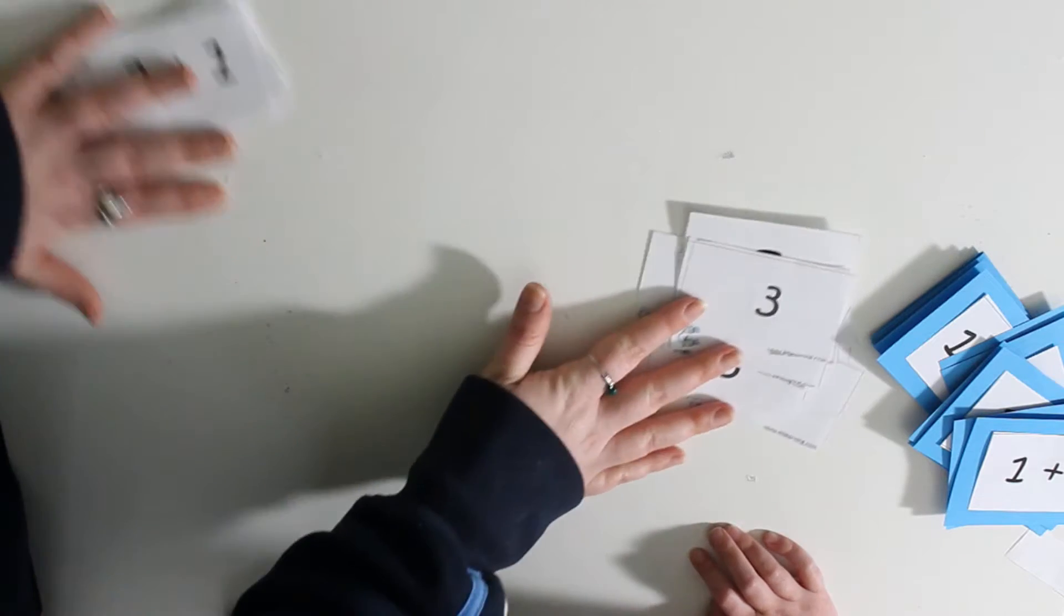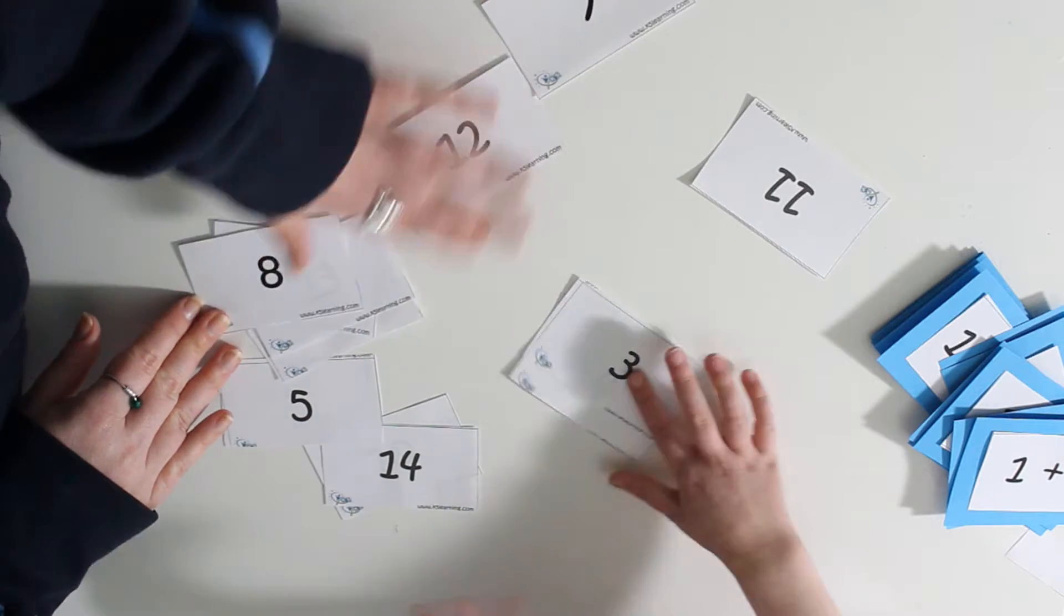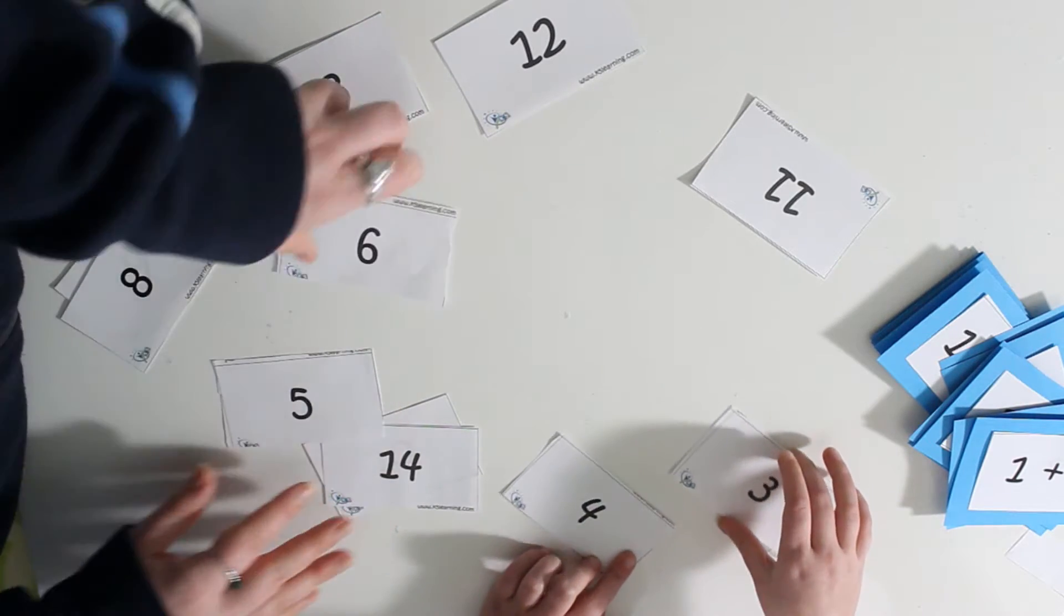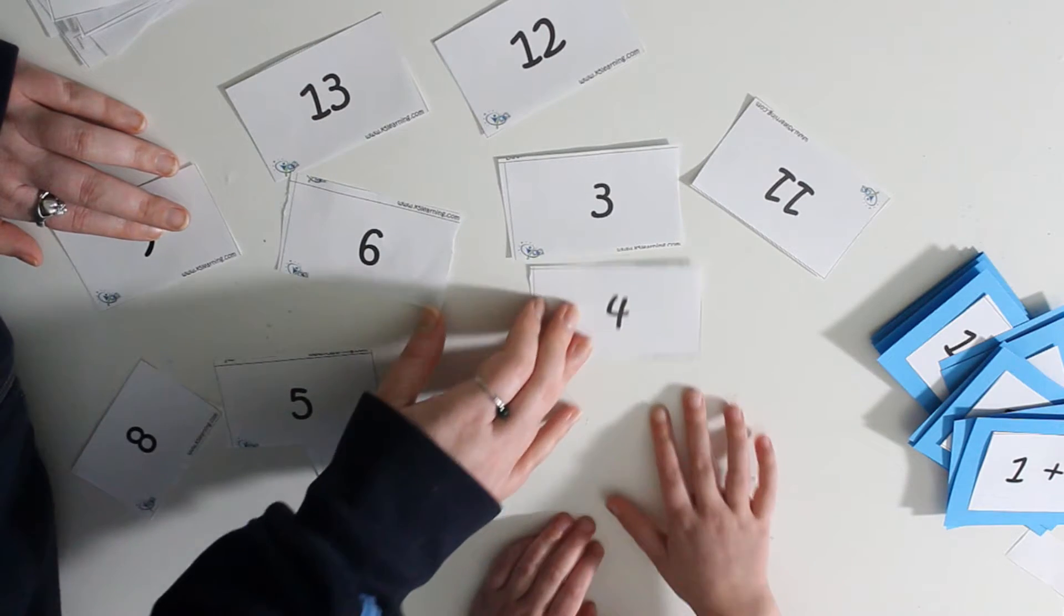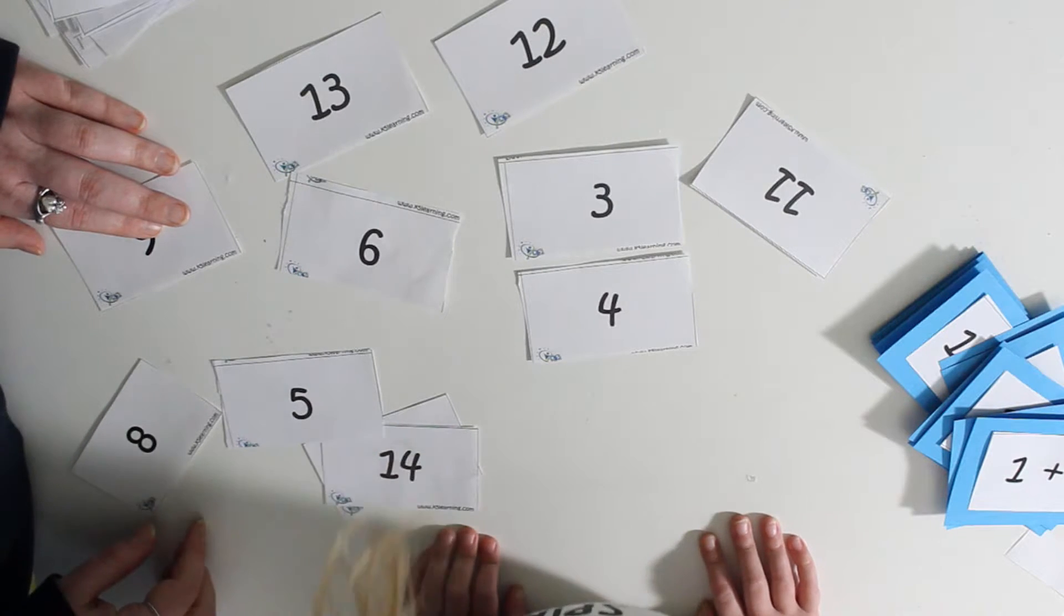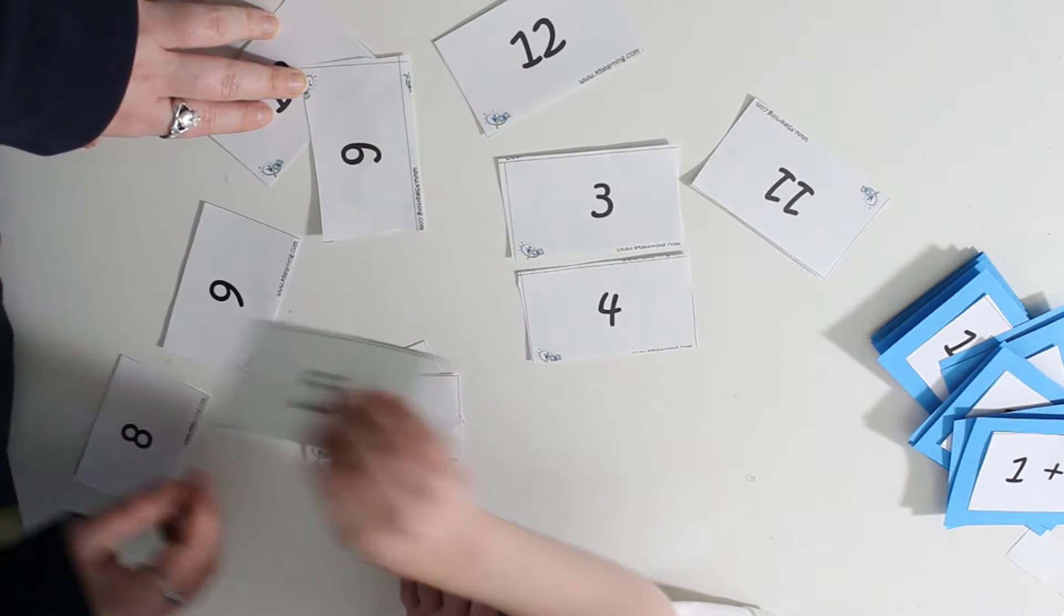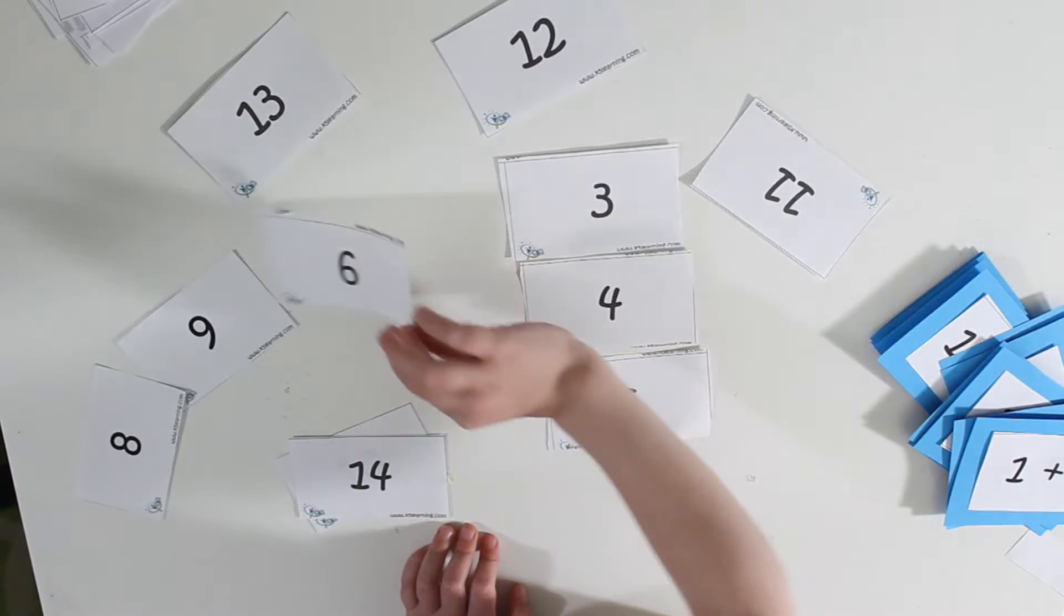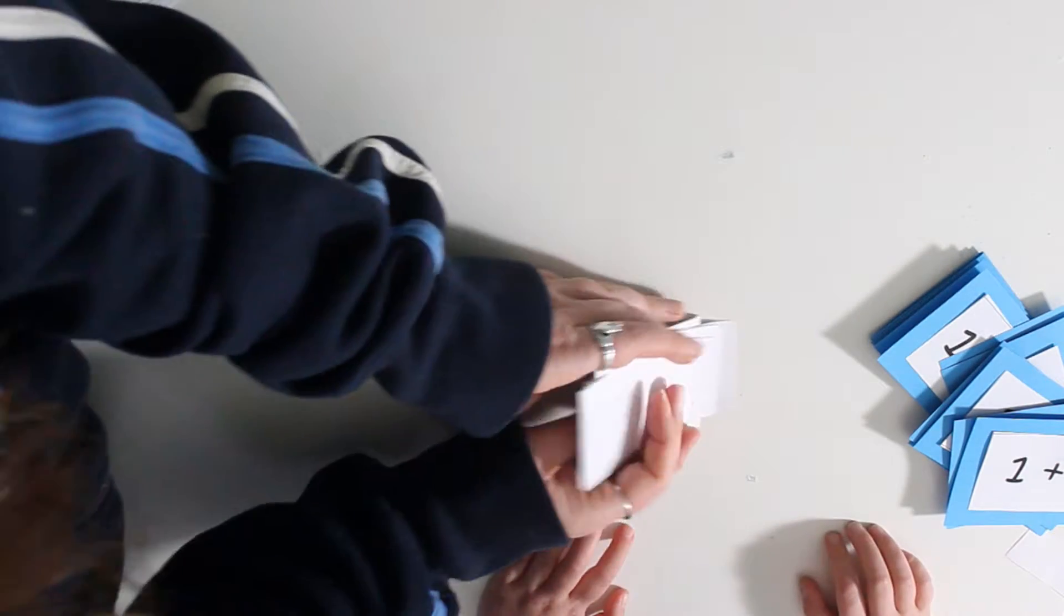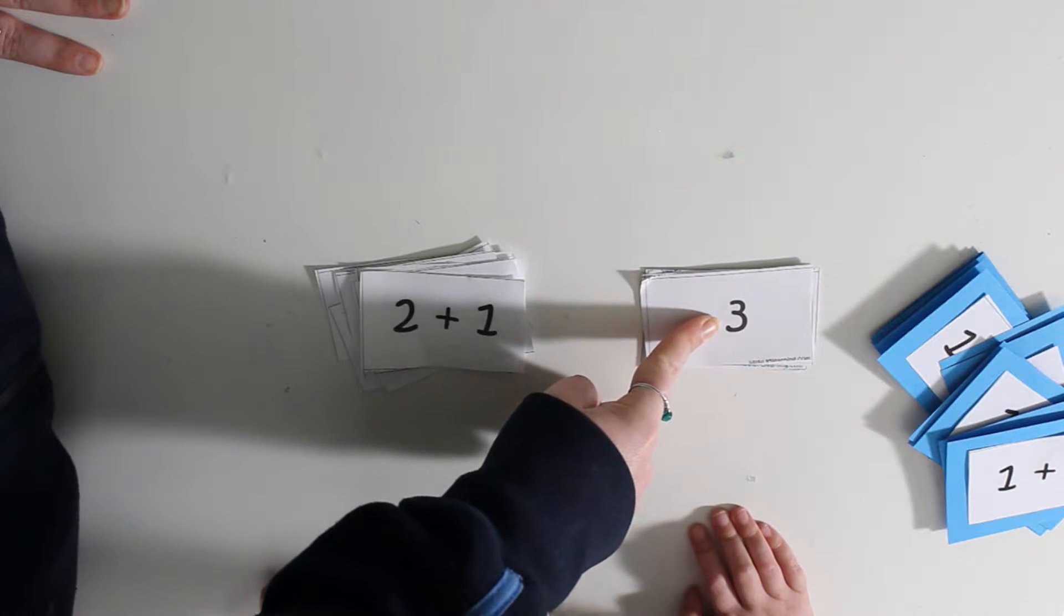All right, now we've got to do the same thing for these. So I bet three is first because these are two plus, so I bet three is first. So three, four, what comes next? Can you find what comes next? Five. Then what comes next? Six. All right, so tap, tap, tap, tap, tap.